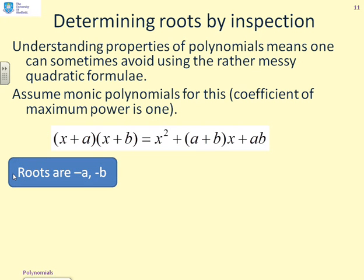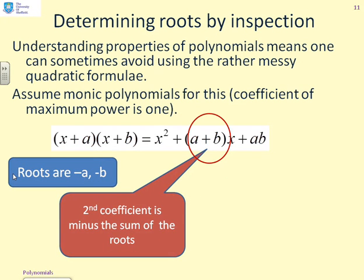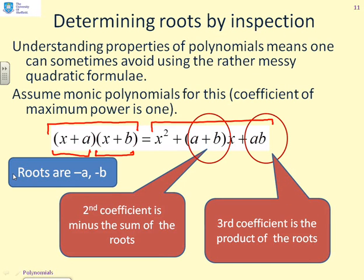Now, what do you notice? There's a clear link between the coefficients of the polynomial and the roots. So, the roots here are minus a and minus b. You can see that because I've got x plus a, x plus b. Now, look at the coefficients. You'll notice the middle coefficient is minus the sum of the roots. It's given as a plus b, whereas the roots are minus a and minus b. What about the constant term? You'll notice the third coefficient is the product of the roots. It's a times b. So, these are very interesting observations. The second coefficient is minus the sum of the roots. The third coefficient is the product of the roots. Now, if you remember this observation, you can sometimes get the roots very, very quickly without going through the quadratic formula. And we'll give an example to illustrate.